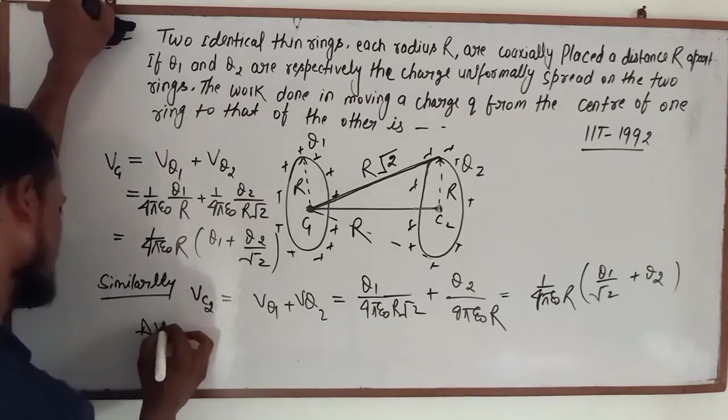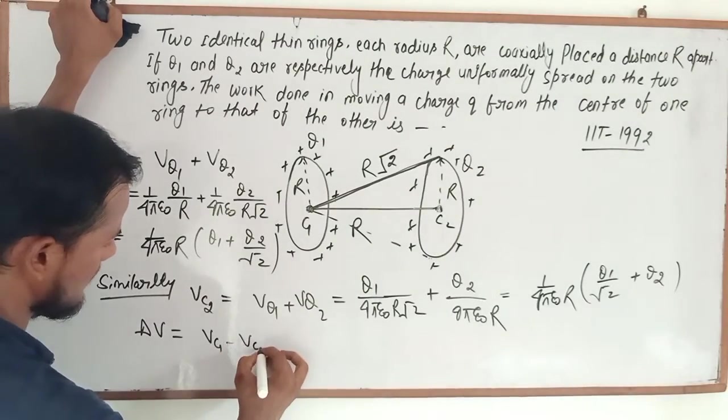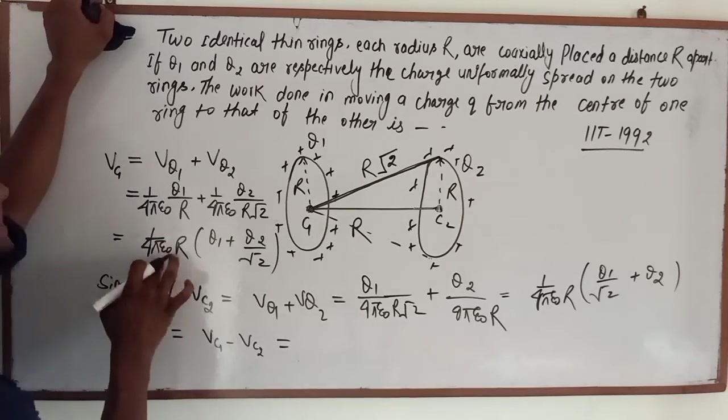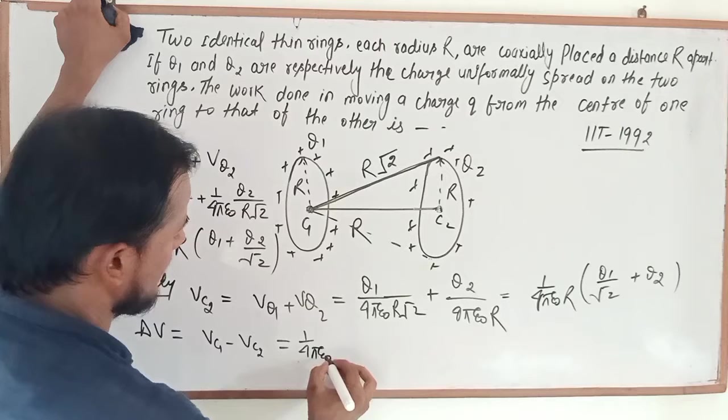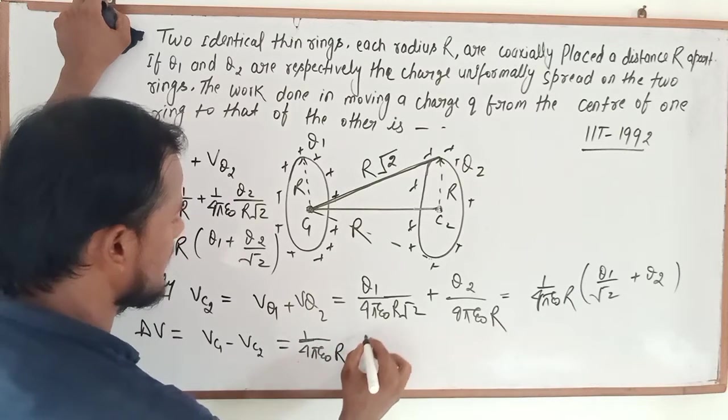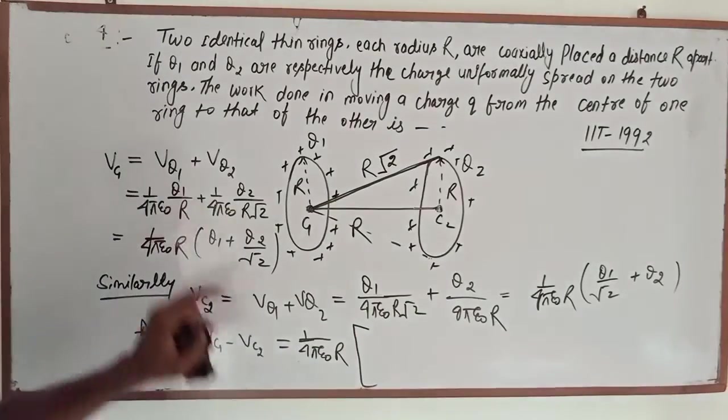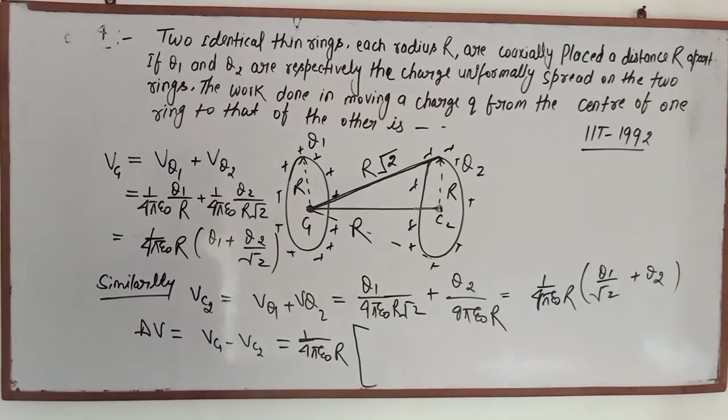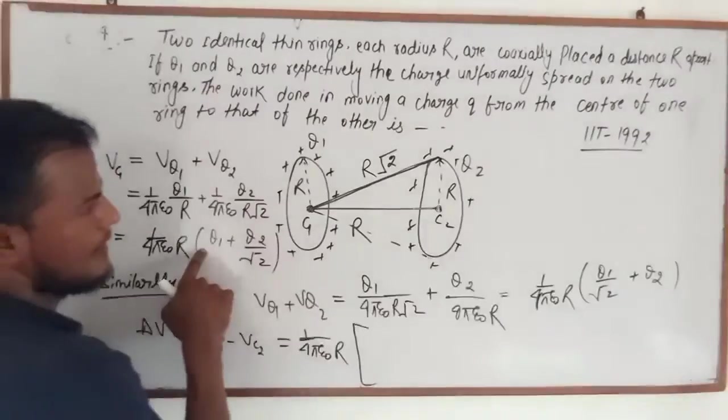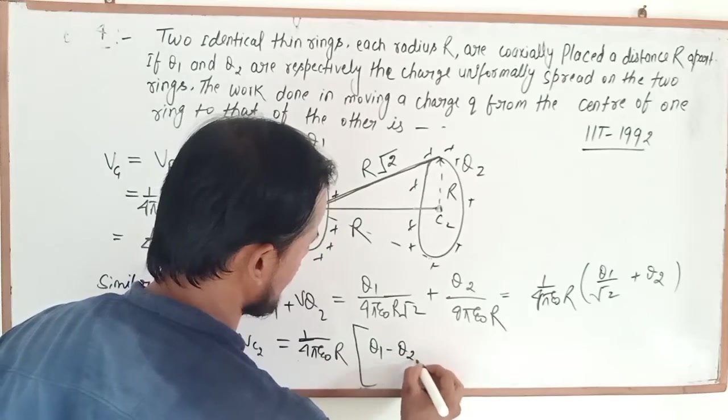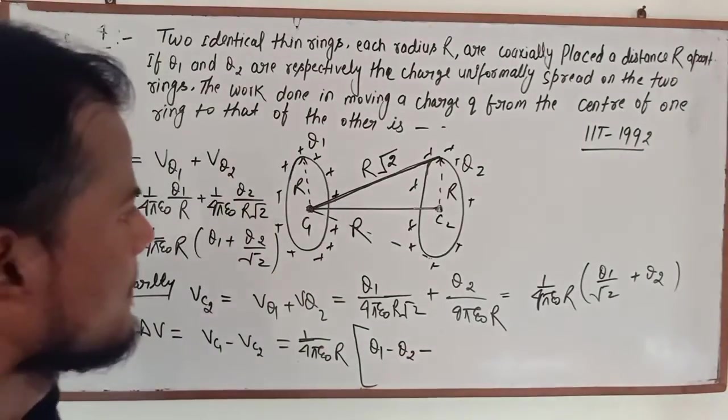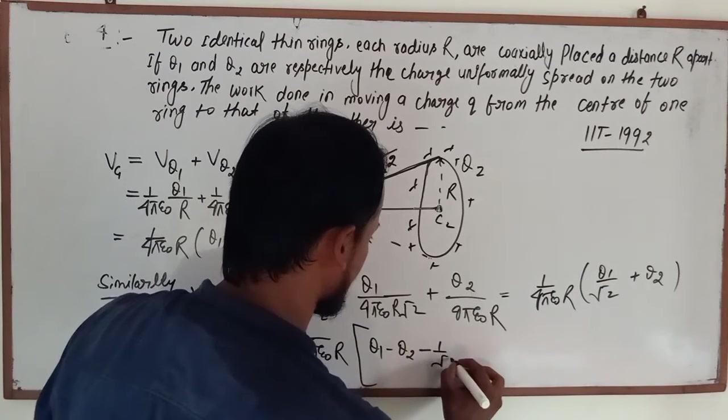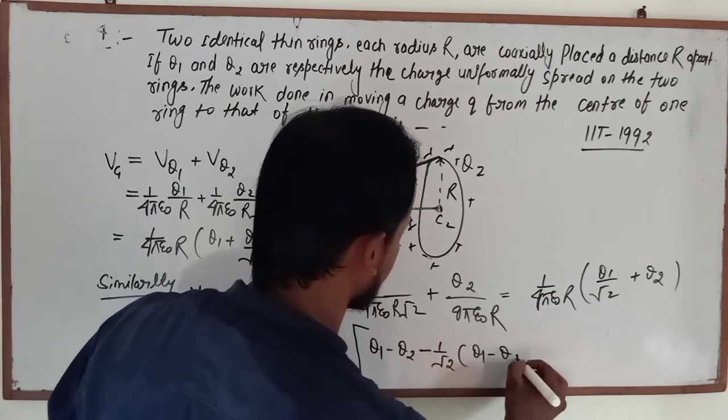So if we talk about the potential difference, VC1 minus VC2. So 1 upon 4 pi epsilon naught R root 2, this simplifies to Q1 minus Q2 divided by 4 pi epsilon naught R. This gives us Q1 minus Q2 divided by 4 pi epsilon naught R.